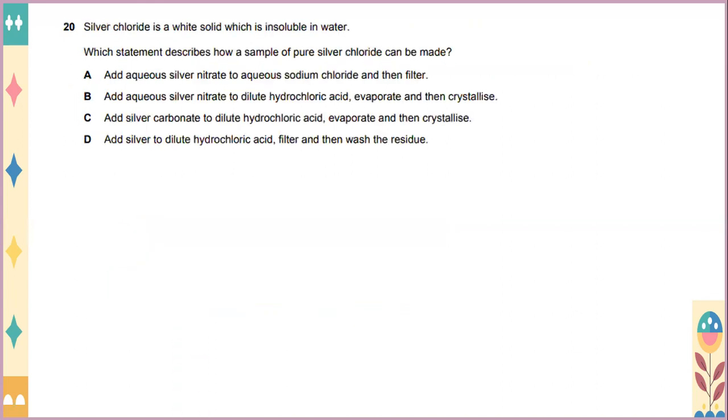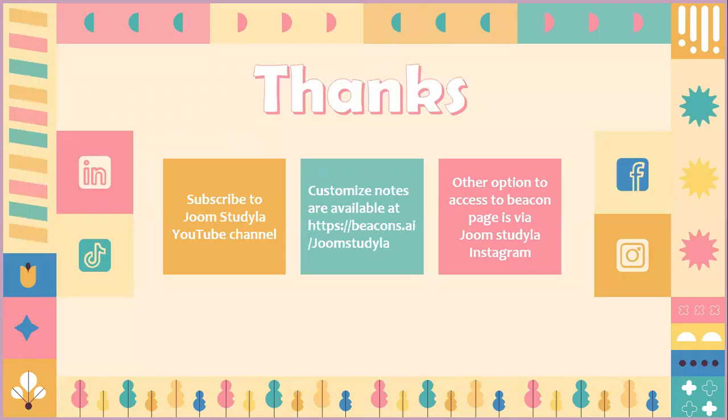Silver chloride is a white solid which is insoluble in water. Which statement describes how a sample of pure silver chloride can be made? So the answer is you have to add aqueous silver nitrate to aqueous sodium chloride, and then you need to filter. With that being said, that's all for today's presentation. Hope that you understand the context and justification to answer the questions given in the multiple choice questions. So please don't forget to subscribe to Jom Stadi Belajar YouTube channel. And there will be a customized note at beacons.ai/JomStadiBelajar. And the other option to access the Beacon page is via Jom Stadi Belajar Instagram. That's all for today. Thank you for listening. Hope to see you in the next presentation.